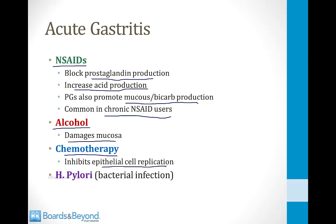Alcohol can also cause acute gastritis by directly damaging the mucosal layer of the stomach. Some chemotherapy drugs inhibit epithelial cell replication, causing a loss of the protective layer. H. pylori can cause acute gastritis as well; data suggest that when you are initially infected with H. pylori, it can cause an acute gastritis, in addition to the chronic gastritis and ulcers it produces over time.